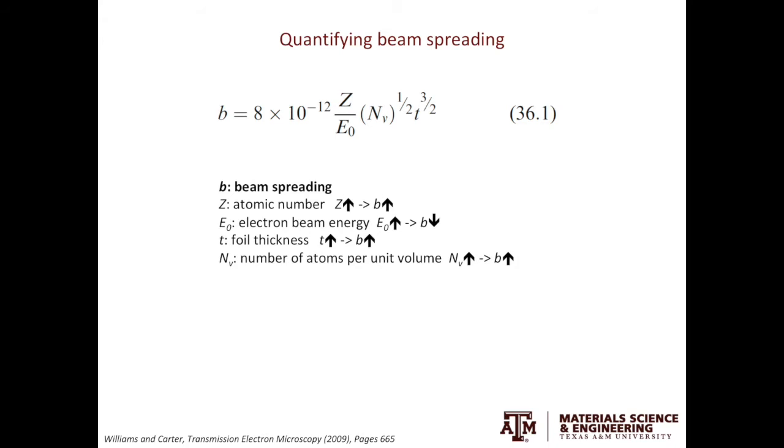Higher number of Z, T, and Nv will lead to more beam spreading, thus poorer spatial resolution for EDS. In contrast, by increasing E0, you can reduce the beam spreading, thus improve the spatial resolution of EDS in TEM.